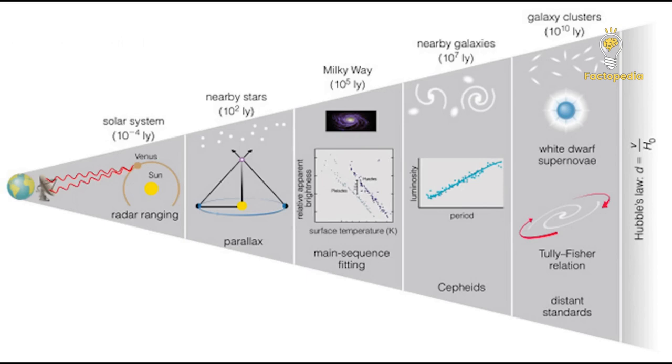This stepwise measurement of cosmic distances is referred to as the cosmic distance ladder. However, uncertainties accumulate at each step of the ladder, adding complexity to the calculations.